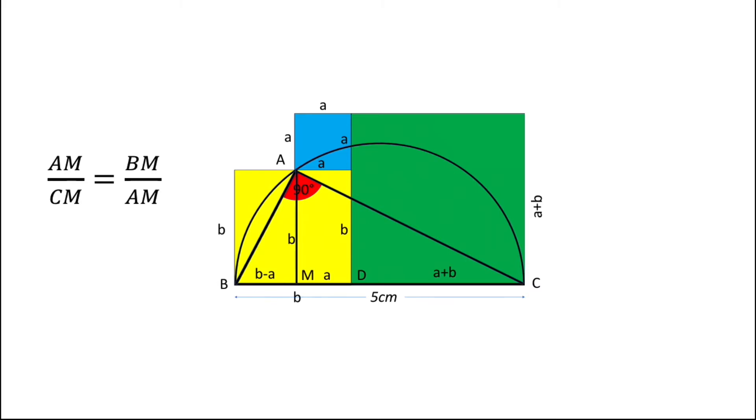So with the help of similar triangles I can write AM over CM is equal to BM over AM. From here by putting the values of AM as b, CM is a plus a plus b because CM is MD plus DC, and we can put AM is b again, BM is b minus a. After putting these values we can get b upon 2a plus b is equal to b minus a upon b. Now cross multiply these expressions. We'll be getting b² equals to 2ab plus b² minus 2a² minus ab.